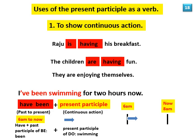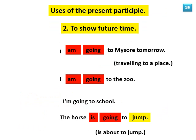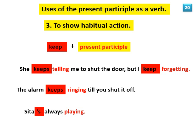Uses of the present participle as a verb to show continuous action: 'Raju is having his breakfast.' 'The children are having fun — they are enjoying themselves.' 'I've been swimming for two hours.' To show future time: 'I'm going to Mysore tomorrow.' 'I'm going to the zoo.' 'The horse is going to jump.' To show habitual action — keep plus present participle: 'She keeps telling me to shut the door but I keep forgetting.' 'The alarm keeps ringing till you shut it off.' 'Sita is always playing.'